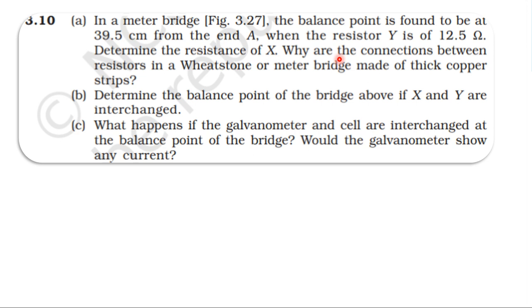The connections between resistances in a meter bridge — also called a Wheatstone bridge — are made of thick copper strips in the meter bridge body.